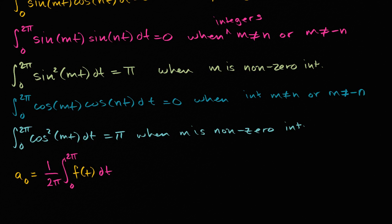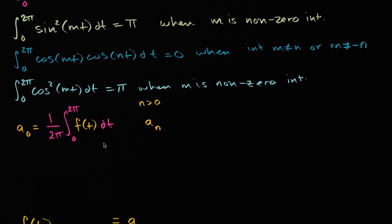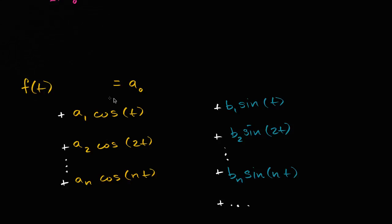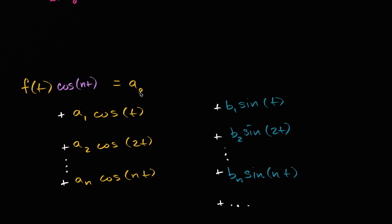What I want to do now is find a general expression for aₙ, where n is an integer greater than zero. I'm going to use a very similar technique. To find a₀, I just took the integral of both sides. Now I'm going to multiply both sides of this equation by cosine of nt. On the left-hand side I multiply by cosine of nt, and on the right-hand side, distributing cosine of nt, I multiply every term by cosine of nt.